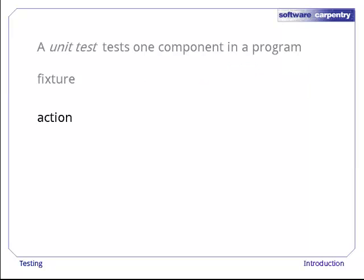The second part is the action, which is what we do to the fixture. Ideally, this just involves calling a function, but some tests may involve more.